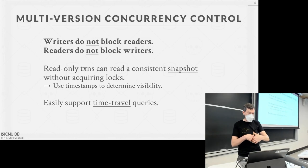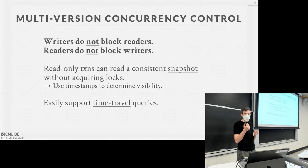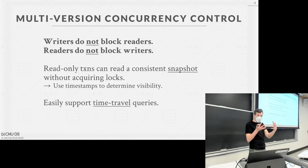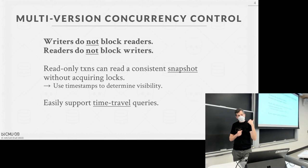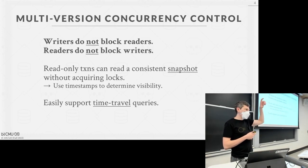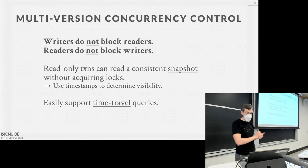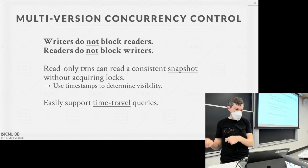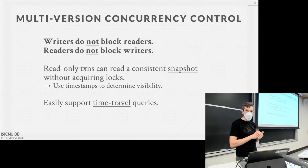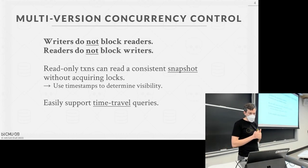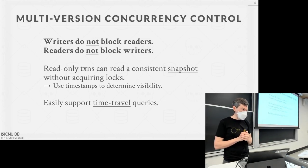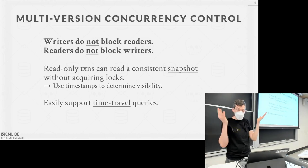Time travel queries: you could say 'I want to run this query on the database as it existed three weeks ago,' then look at old versions to find what the tuple's value was then. Postgres originally supported this in the 1980s, but when the open-source version was built it needed to add garbage collection — without it you run out of disk quickly. Most people don't need the time travel feature, with the exception of regulatory use cases like banks needing to know their database state from weeks ago.